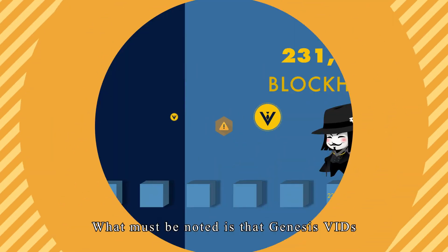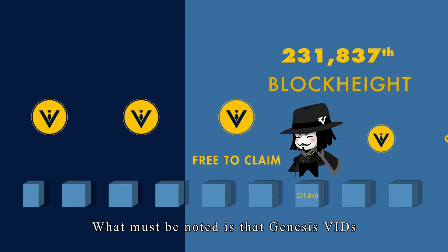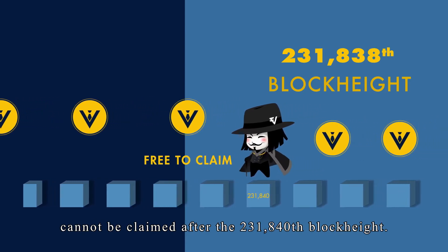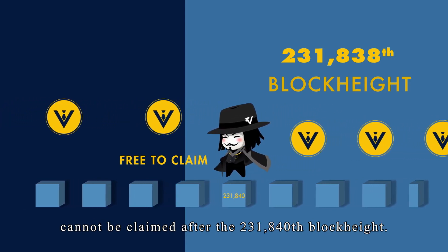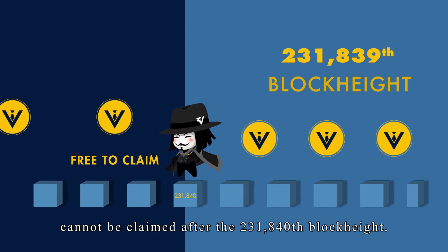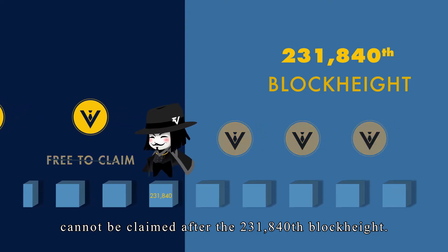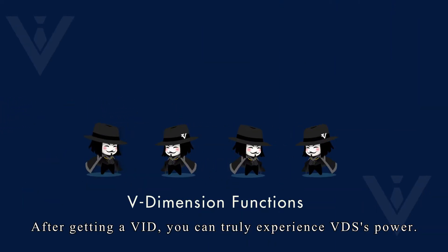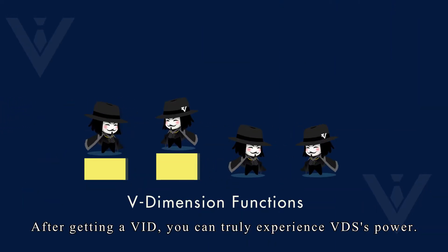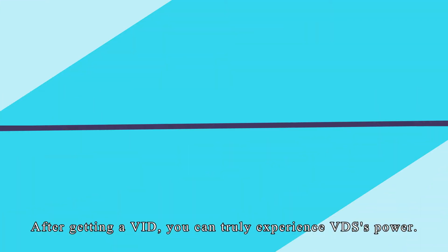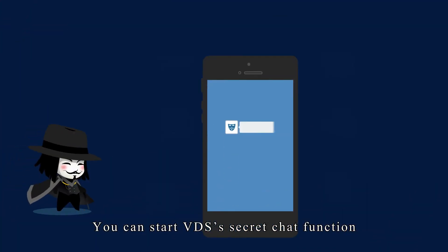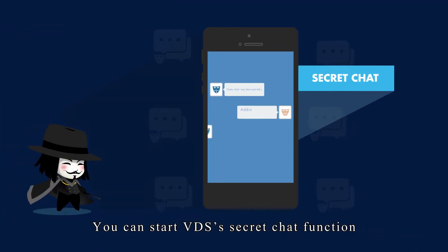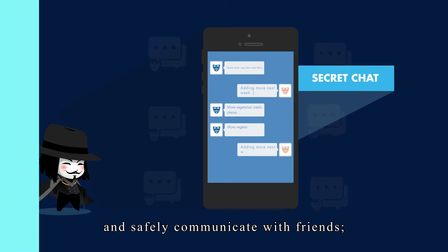It must be noted that a Genesis VID cannot be claimed after the 231,840th block height. After getting a VID, you can truly experience VDS's power — you can start VDS's secret chat function and safely communicate with your friends.